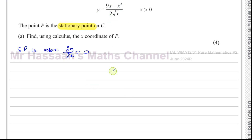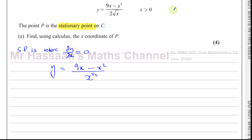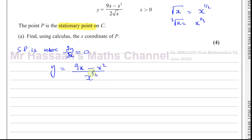We've got to find dy/dx, the gradient function, equate it to zero, and solve for x to find the x coordinate of P. We start with y equals 9x minus x squared over 2 root x. I'm going to write root x as x to the power of a half. From our understanding of indices, the square root of x is x to the power of a half. If it were a cube root of x, that would be x to the power of a third.